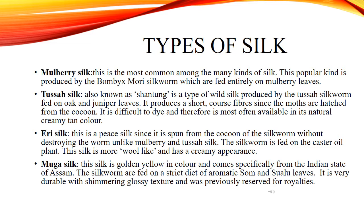Tusse silk, also known as Shantung, is a type of wild silk produced by the Tusse silkworm fed on oak and juniper leaves. It produces short, coarse fibers since the moths are hatched from the cocoon. It is difficult to dye and therefore is most often available in its natural creamy tan color.